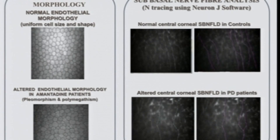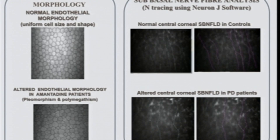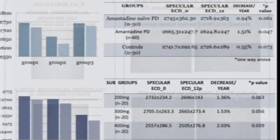These pictures show normal endothelial cell morphology and pictures showing pleomorphism and polymegathism. This is the subbasal nerve fiber tracing using NeuronJ. You can find decreased nerve fiber density in Parkinson's patients on amantadine.